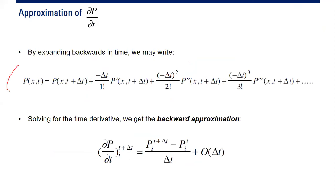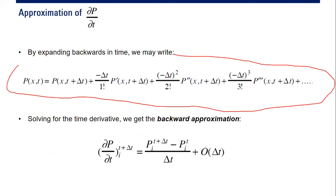By expanding backward in time, we get the backward expansion for time. Rewritten, the order is again delta t. So this is the backward expansion for delta p per delta t.